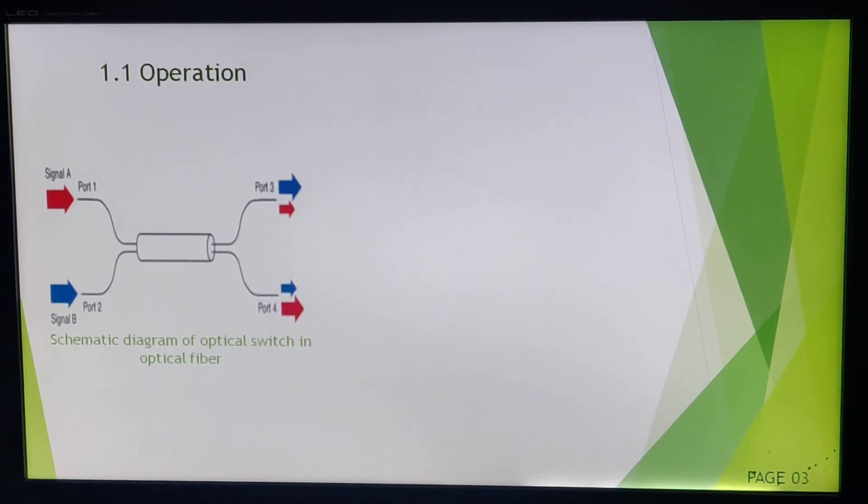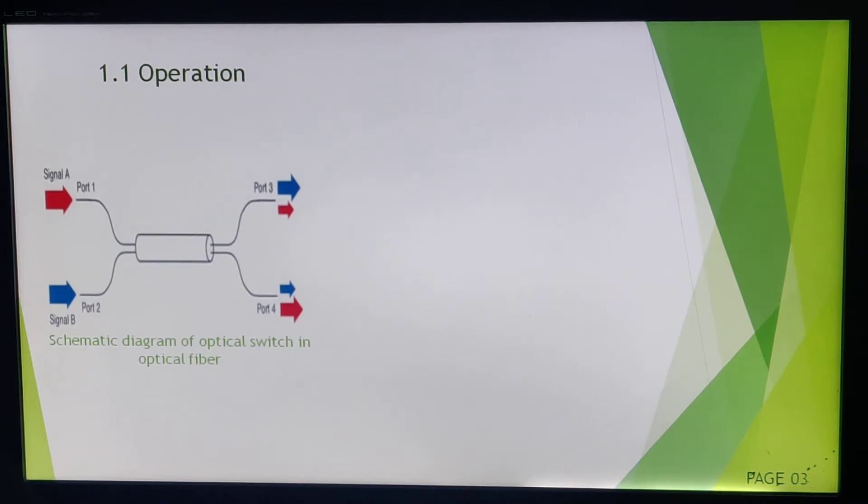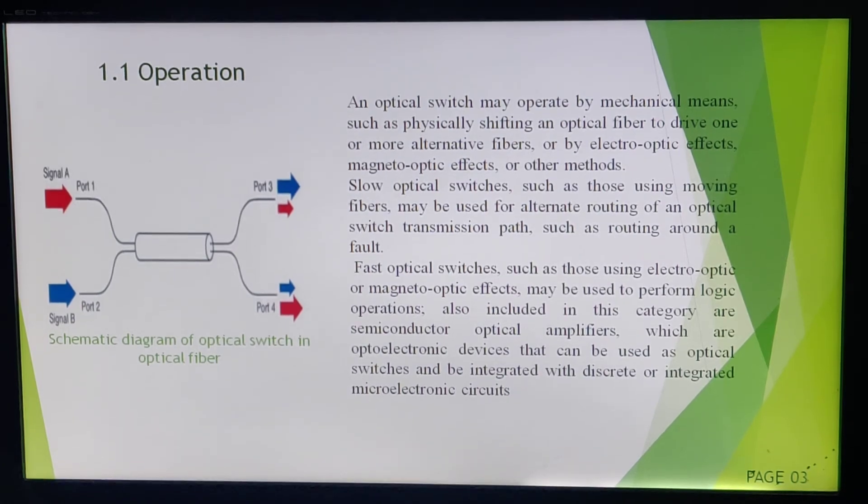Also there are two types of optical switching: slow optical switch and fast optical switching. Slow optical switching may be used for alternate routing of an optical transmission path, such as routing around a fault. If there is any fault I want to reroute, then I will use slow optical switch. Second classification is fast optical switches. These are using electro-optic or electromagnetic effect. It uses electro-optic or magneto-optic effects and is generally used for logic operations. It also includes semiconductor optical amplifiers which are optoelectronic devices that can be used as optical switches and can be integrated with discrete or integrated microelectronic circuits.